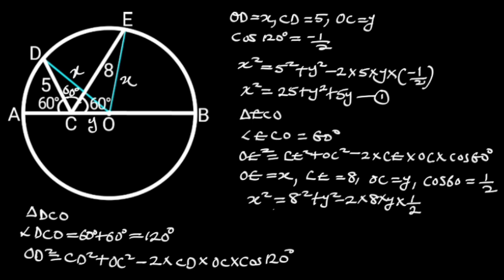Simplifying these will give us X squared is equal to 64 plus Y squared minus 8Y. Let's call this equation 2.